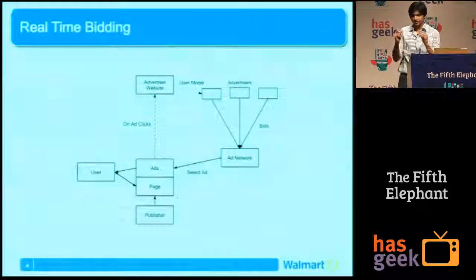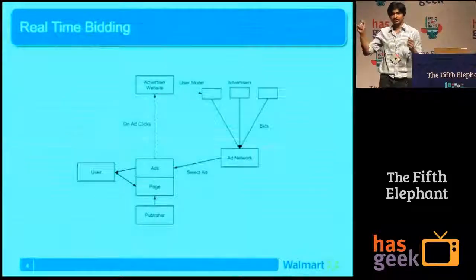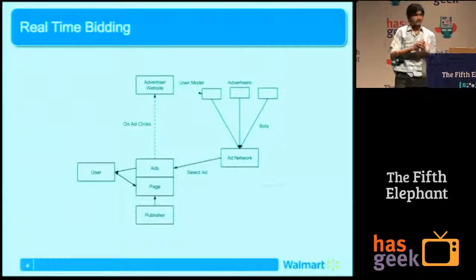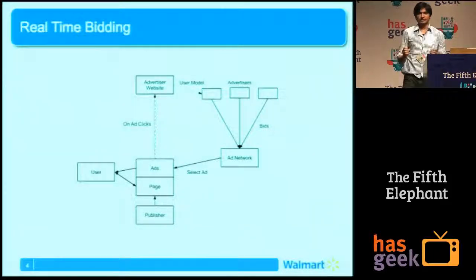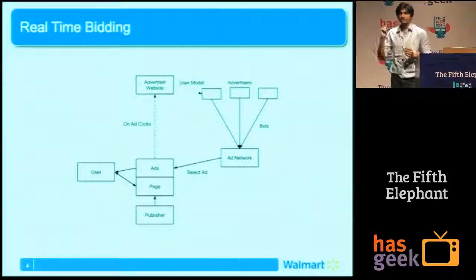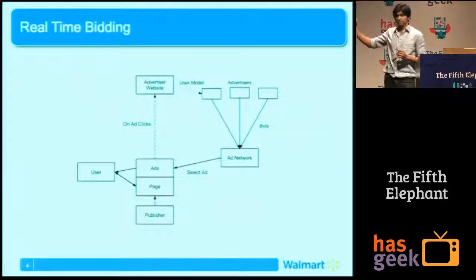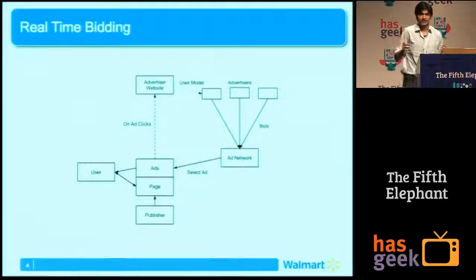The ad network recognizes which user is trying to open your blog post and communicates this information to every single advertiser it has deals with. Every advertiser gets to know this user is trying to open this page right now. They're allowed roughly 10 to 20 milliseconds to decide how much money they're willing to spend to show that one impression. So instead of buying bulk impressions, you bid for every single impression. Whoever submits the highest bid gets chosen as winner and is allowed to show an ad. Every single time a web page loads, there's an auction going on.